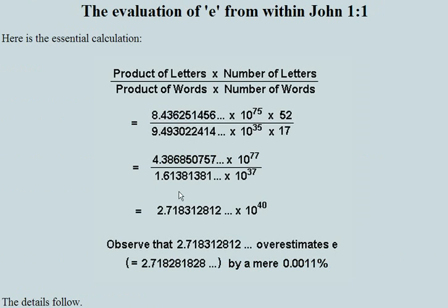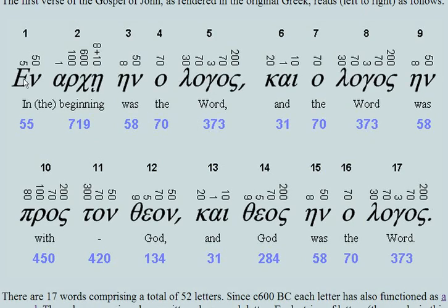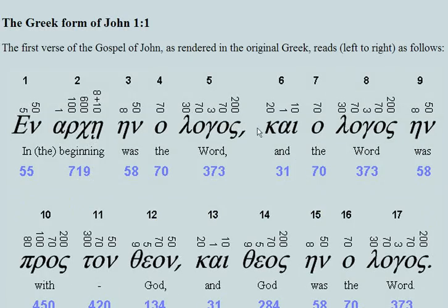Now for e, the same formula is applied — product of the letters multiplied by the number of letters, divided by the product of the words multiplied by the number of words. This is applied to John 1:1 in Greek. The letter epsilon has a value of 5, because the Greeks also used their alphabet as their numbering system. Nu has a value of 50, alpha has a value of 1, and so on. We multiply all the letter values together, giving us the numerator, and there are 52 letters in total.